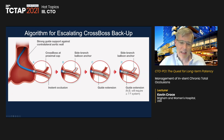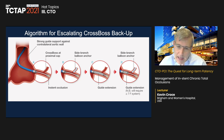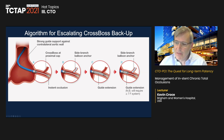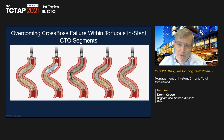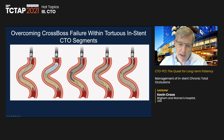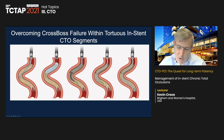The CrossBoss requires a lot of backup. Techniques to enhance backup include strong guide support, guide extenders, anchor balloons, and large systems that can accommodate both guide extenders and CrossBoss simultaneously. For overcoming CrossBoss failure with tortuous in-stent segments, sometimes a bit of ballooning, switching to an antegrade strategy with a micro catheter or wire, going around the obstruction, and then returning to the CrossBoss can be successful.